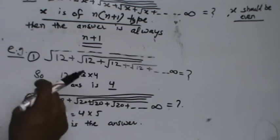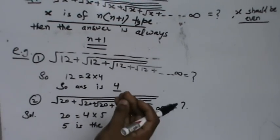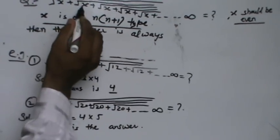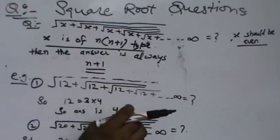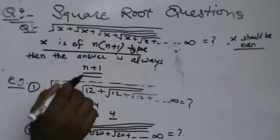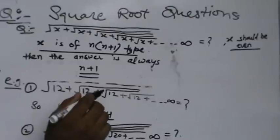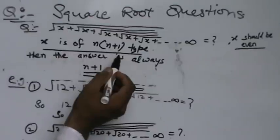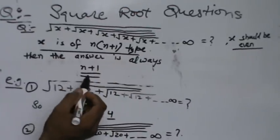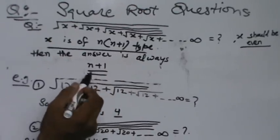Suppose we are given another question like square root of 42 plus square root of 42 plus square root of 42 up to infinity. This means 42 equals 6 into 7, so the answer is 7. In these kinds of questions, the terms should be of the n into n plus 1 type, so the answer will always be n plus 1. Thank you.